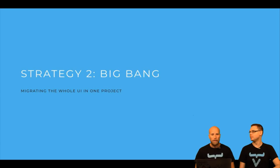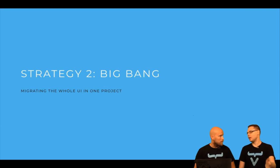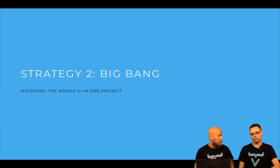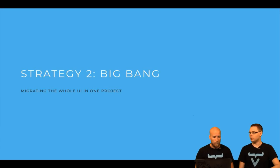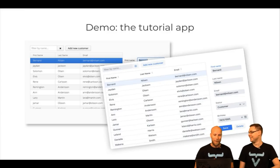For the migration itself, there's a big bang strategy — do all the migration at once, basically rewriting the UI layer. You can't keep one part of your application on Vaadin 7 or 8 and another on Vaadin 10 without compromises. With Vaadin 8 we had legacy packages to mix versions, but that's not practical with this major upgrade to web components.